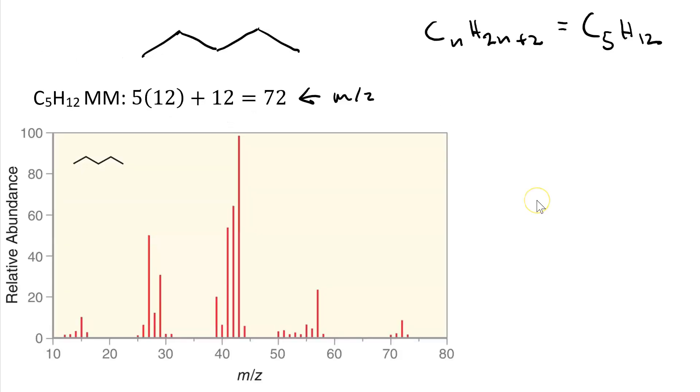And here is the mass spec for pentane. Here is 70, 71, and 72. That is the molecular ion peak. Notice it is not the base peak.